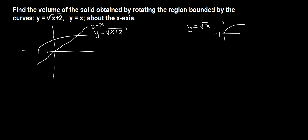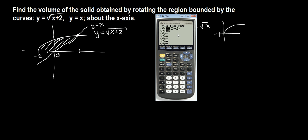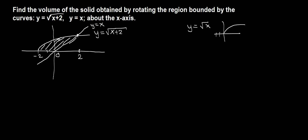y equals x. Now the region bounded by these two curves — this is 0, this is negative 2. We need to find this coordinate. If you graph using your graphing calculator, you can easily see: root x plus 2 and root x graphed. Zooming in, we can see this point is at x equals 2, and y equals x is also 2.